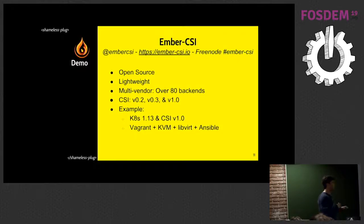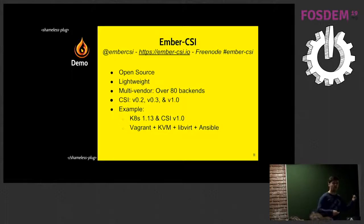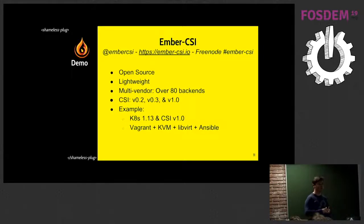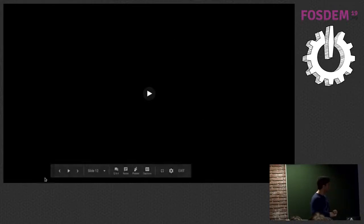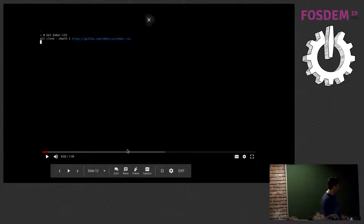Now I'd like to do a quick demo of Ember CSI, which is a CSI plugin that supports around 80 different backends. It supports CSI 0.2, 0.3, and 1.0 on the same container. The example launches Kubernetes 1.13 with Ember CSI 1.0 using an LVM backend — I use LVM because I don't want to favor any storage vendor — and it deploys one infrastructure node and two workload nodes. It's a recording because I didn't want to risk it live.